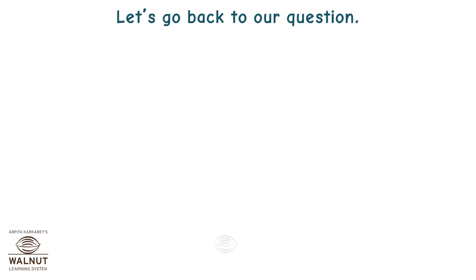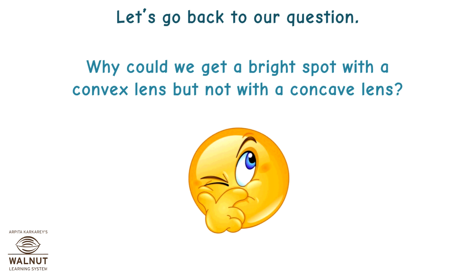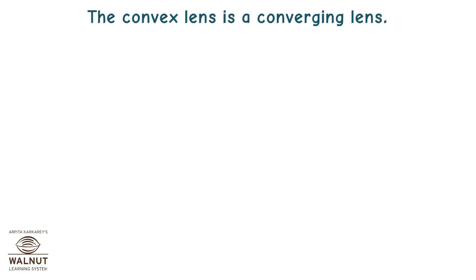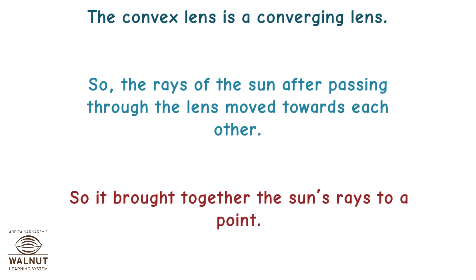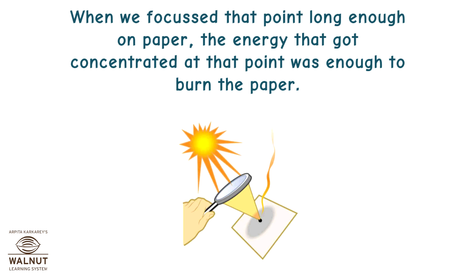Let's go back to our question. Why could we get a bright spot with a convex lens but not with a concave lens? The convex lens is a converging lens. So the rays of the sun after passing through the lens move towards each other. So it brought together the sun's rays to a point. When we focused that point long enough on paper, the energy that got concentrated at that point was enough to burn the paper.